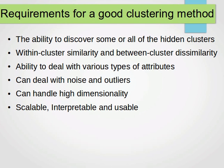Requirements for a good clustering method: it needs to have the ability to discover hidden clusters — within-cluster similarity and between-cluster similarity. That means the method needs to be aware of how similar or dissimilar clusters are, and how similar the components of each cluster are. It also needs to deal with various types of attributes — numerical and categorical — and handle noise and outliers. Noisy data means two or more data points have the exact same attribute values but belong to different clusters.